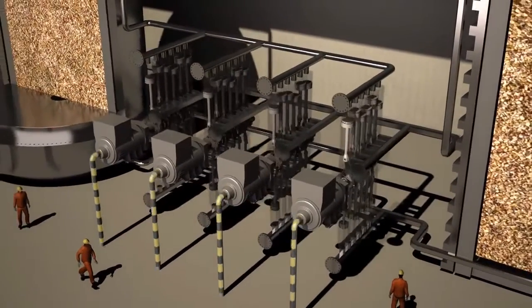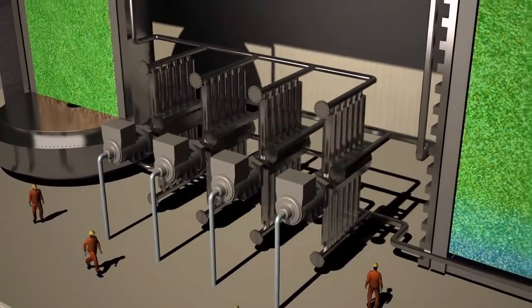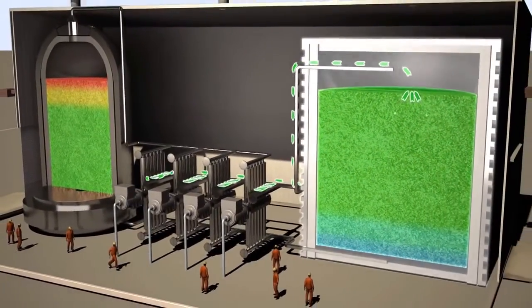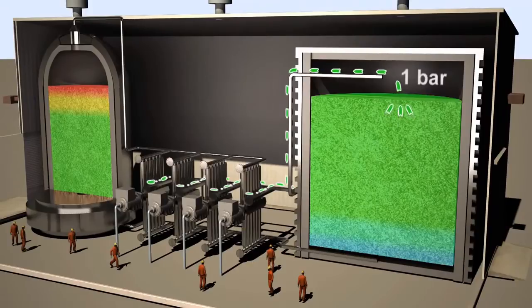The electricity comes in and is used to drive the piston in the upper cylinders. Starting at the top of the cold store, the gas is at 1 bar pressure and ambient temperature.